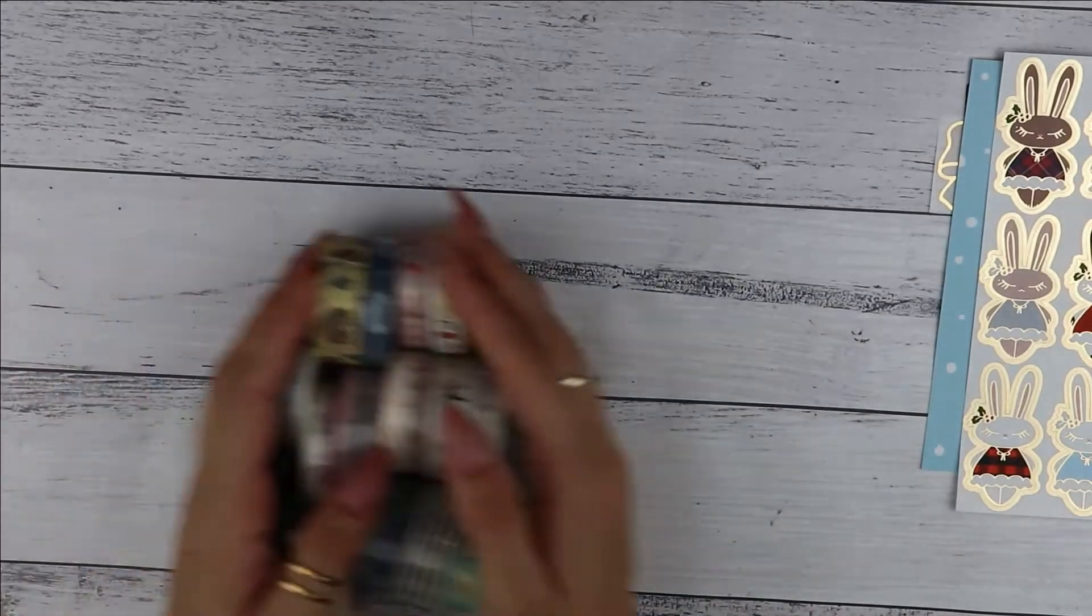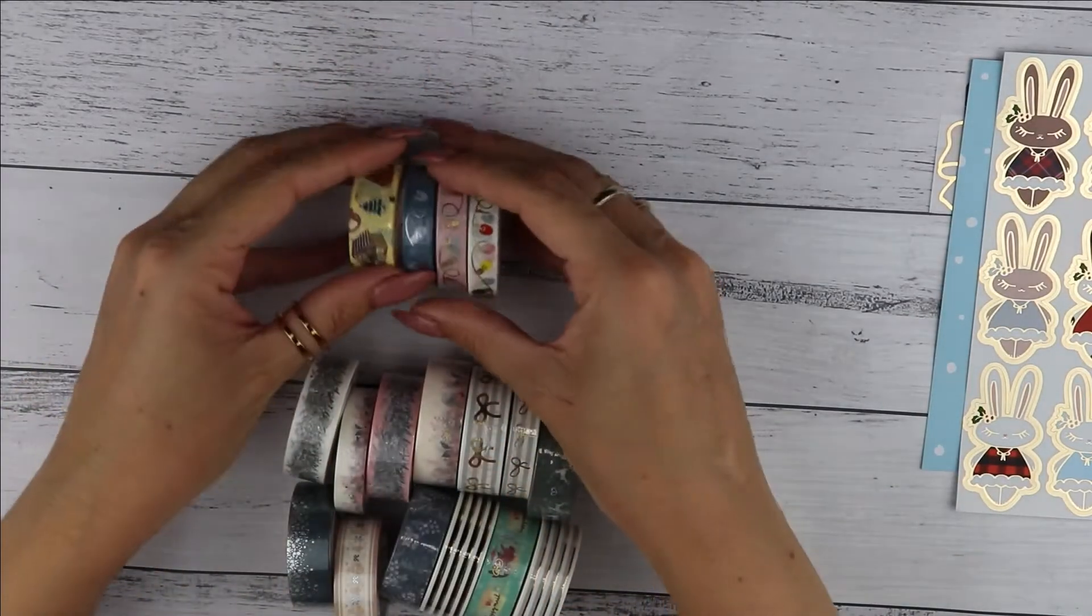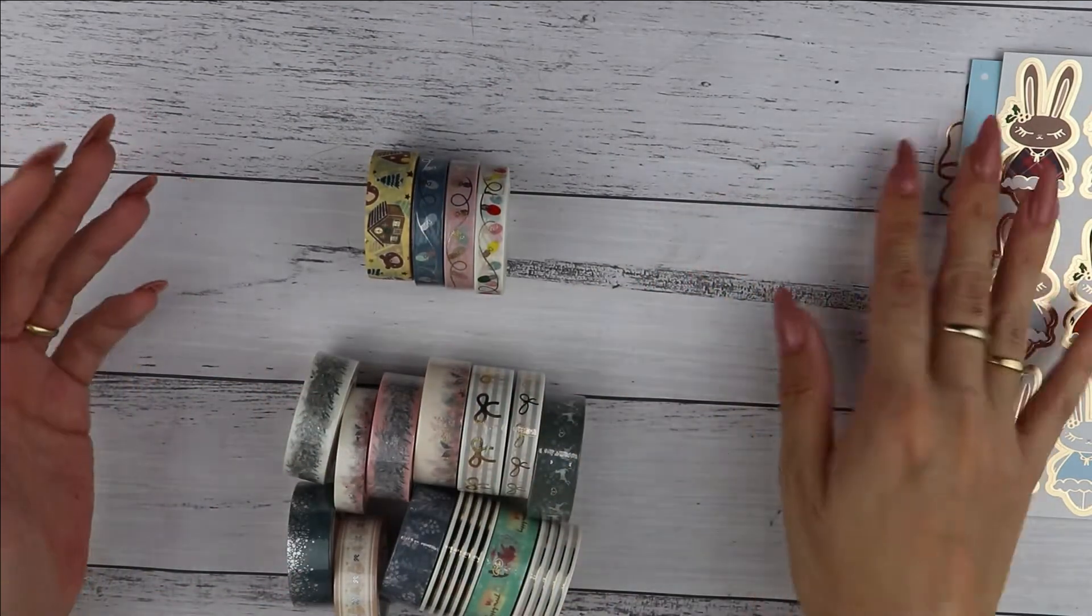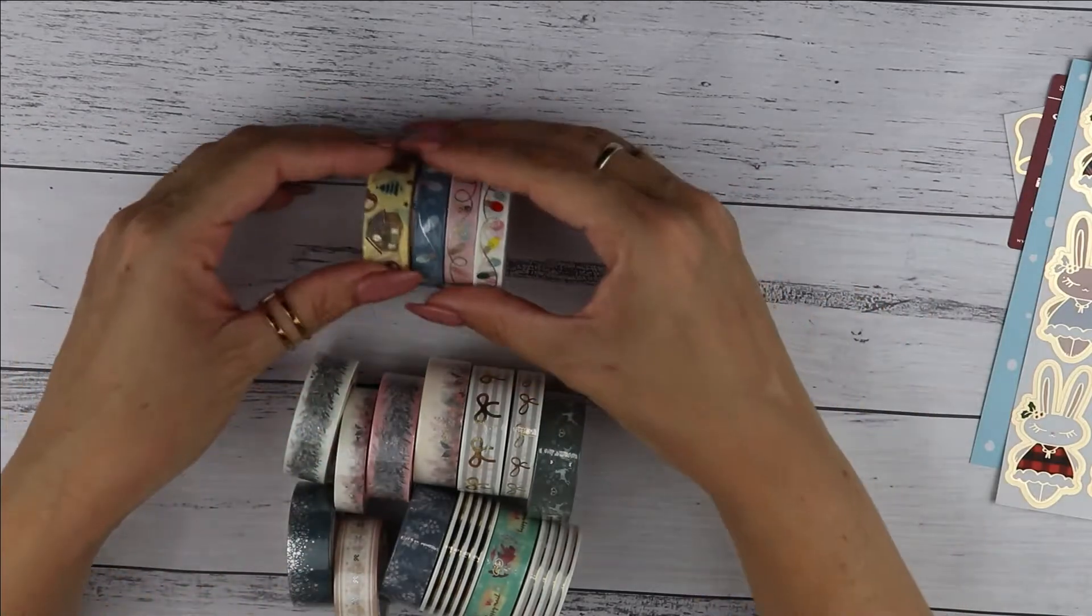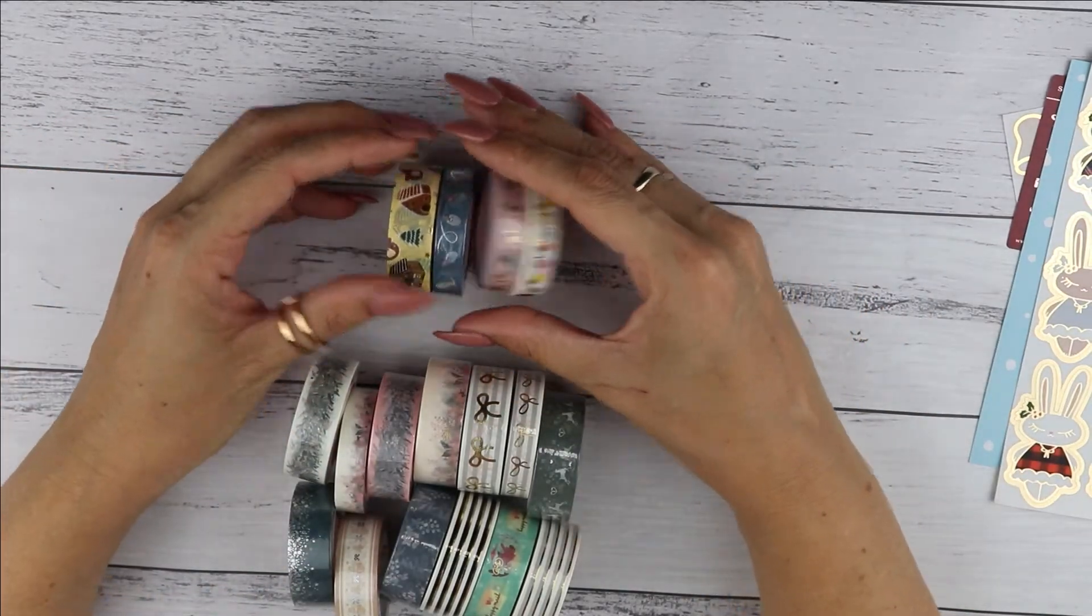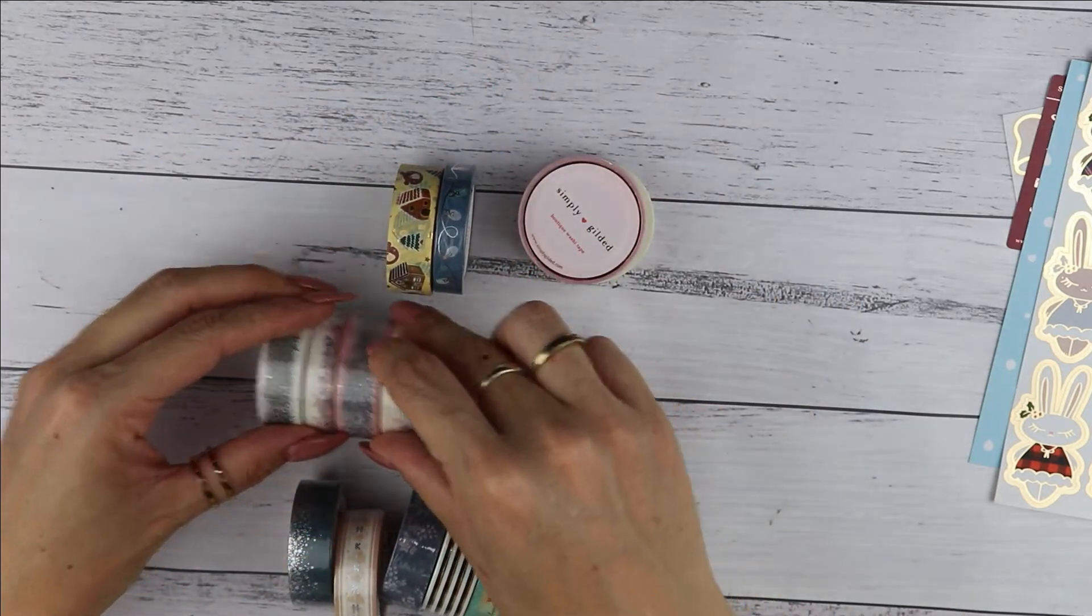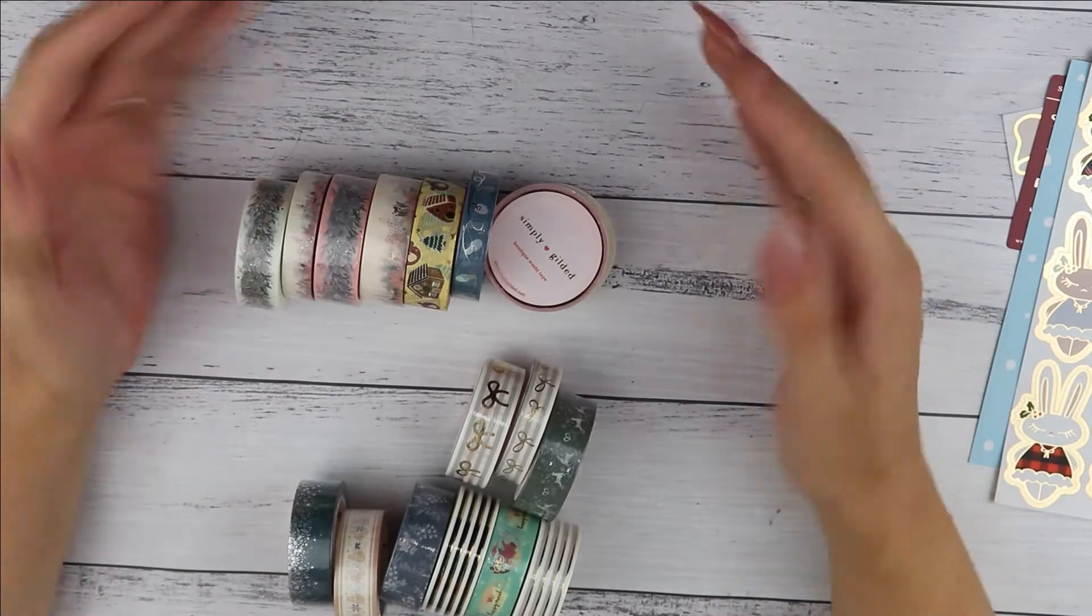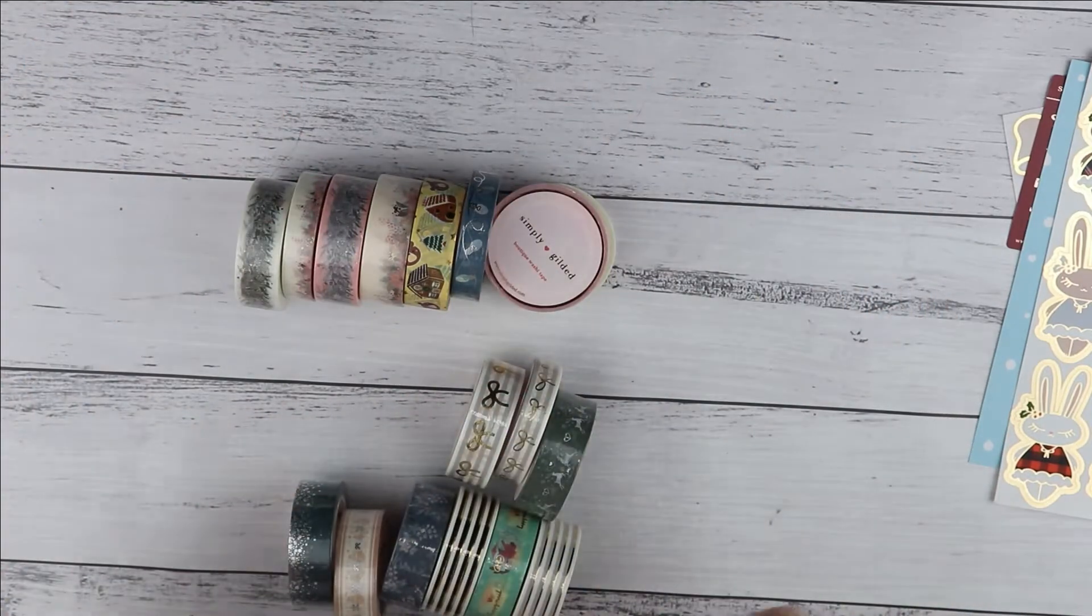Now the washi I will show you, a few of them were bundles. This was the holiday lights bundle and this was the wreath bundle, and the other ones I just picked and chose from the options. So let's unwrap everything and roll it out for you.